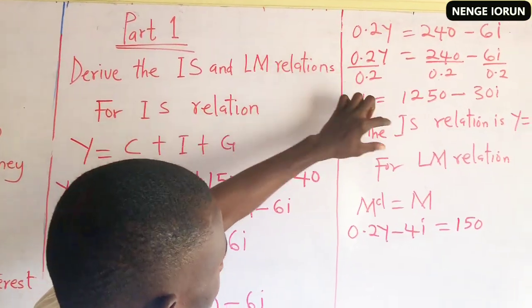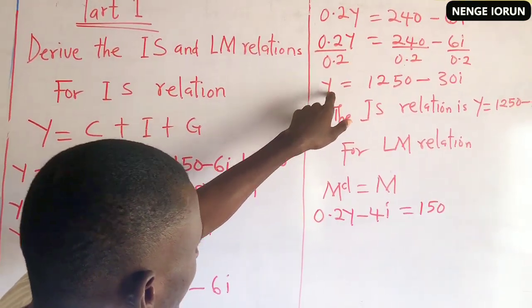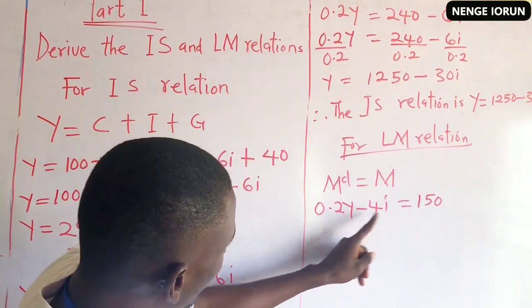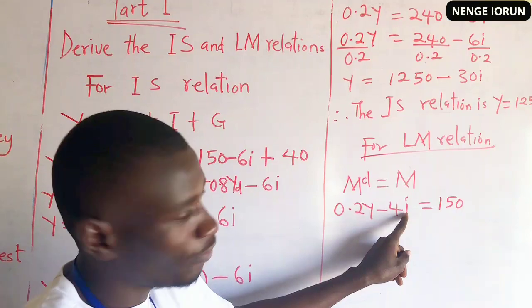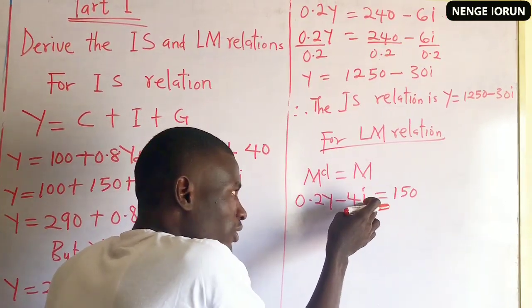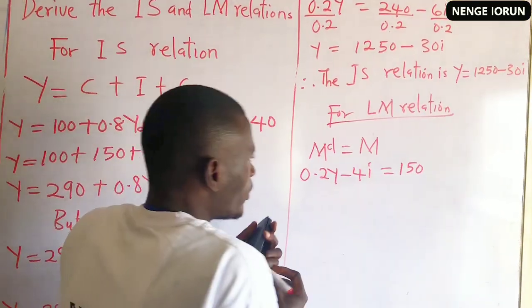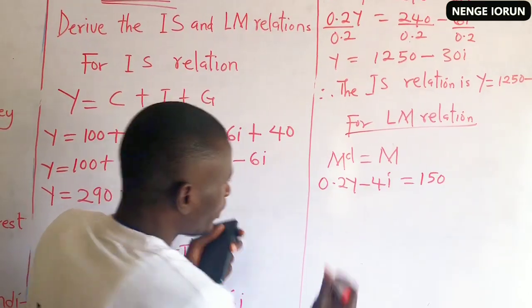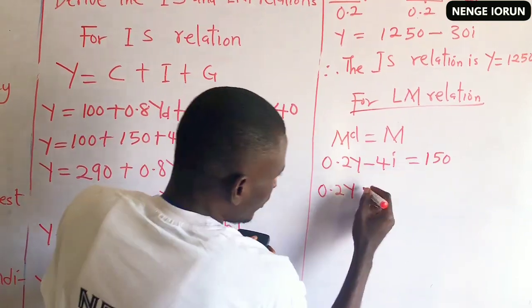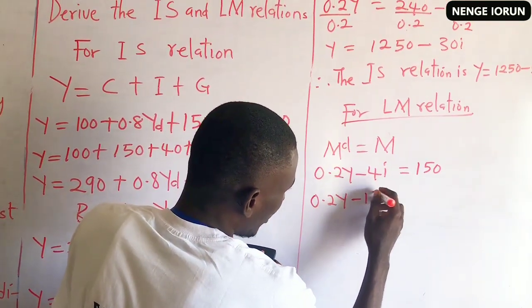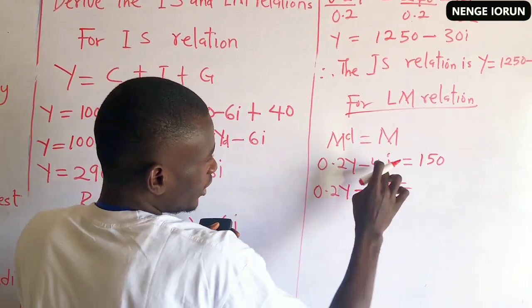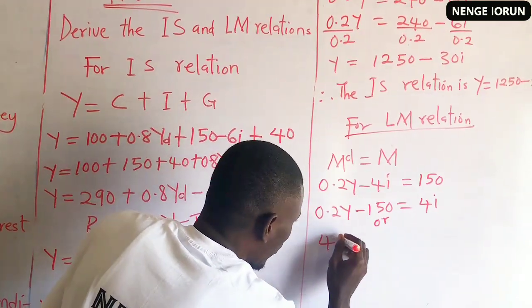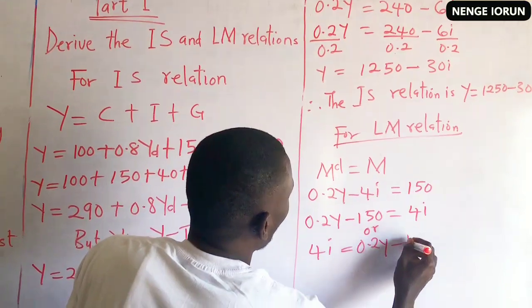The IS relation was expressed with Y as the subject. For the LM relation, we make R the subject. Rearranging: take minus 4R to the right-hand side and 150 to the left. We get 0.2Y minus 150 equals 4R, which can be written as 4R equals 0.2Y minus 150.